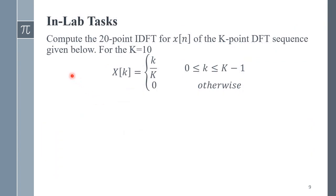Here we are going to perform some extra tasks. You are going to compute the 20-point Inverse Discrete Fourier Transform to get x(n) back from the K-point DFT sequence given, where K equals 10. You are given X(k) and will use the 20-point IDFT to achieve x(n). You have the IDFT formula from the previous slides, and you can use that routine to implement and recover x(n) from X(k).